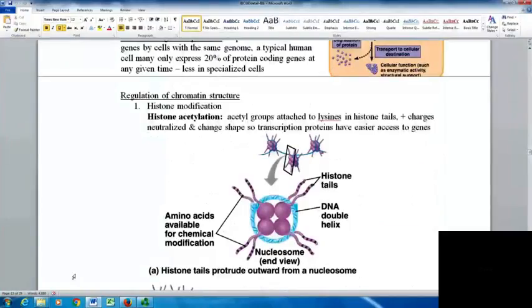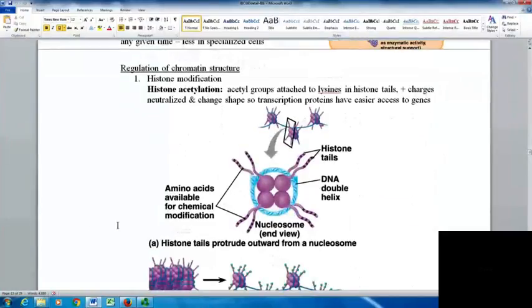One way of regulating in eukaryotic cells is chromatin structure. Histone modification, particularly histone acetylation, takes acetyl groups and attaches them to lysines in the histone tails. The positive charges are neutralized and the shape changes, allowing transcription proteins easier access to genes by preventing the DNA from winding up as much.